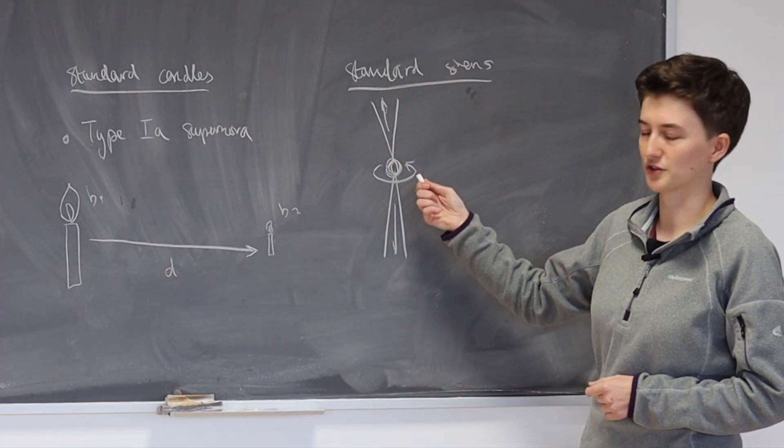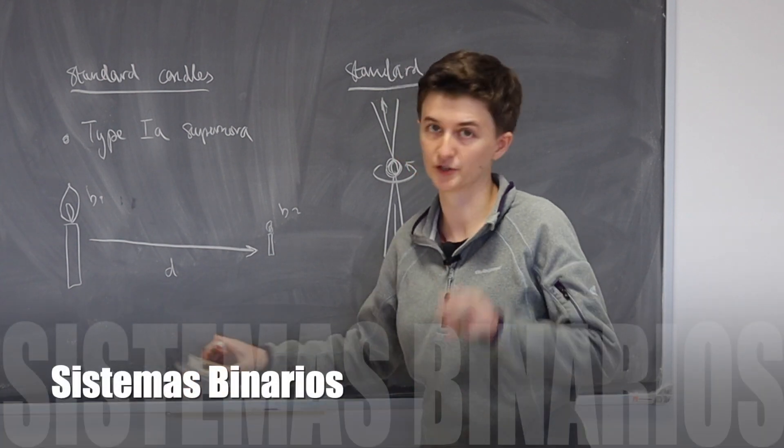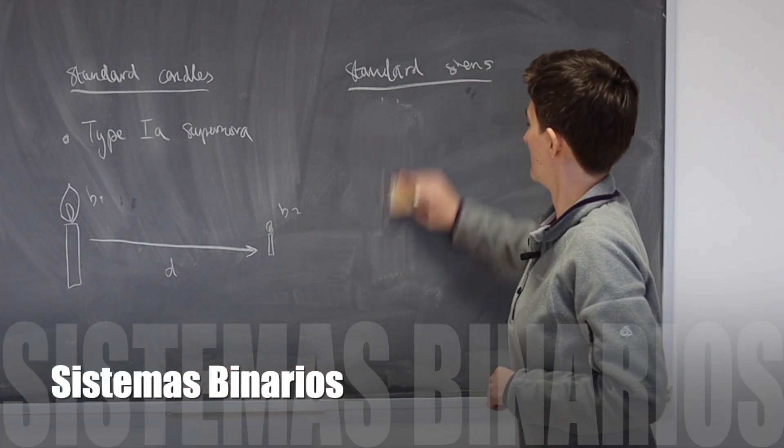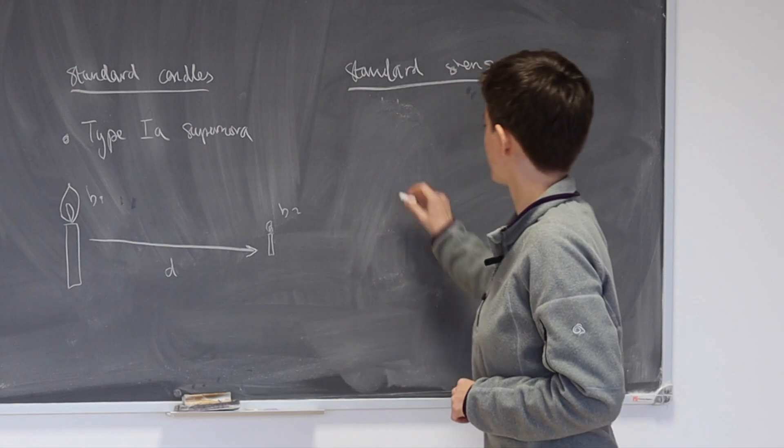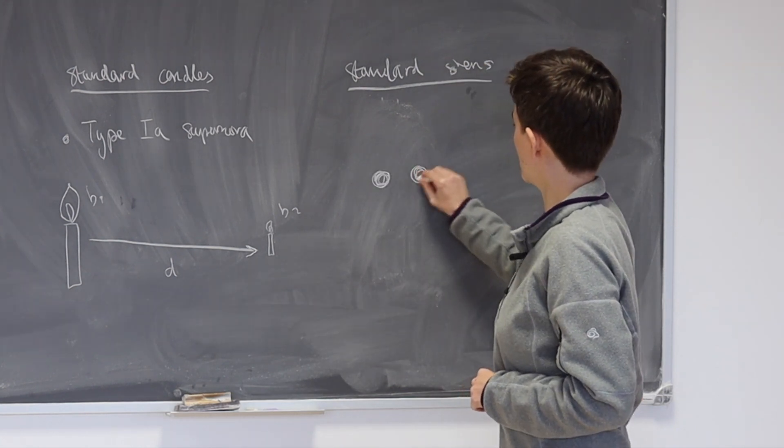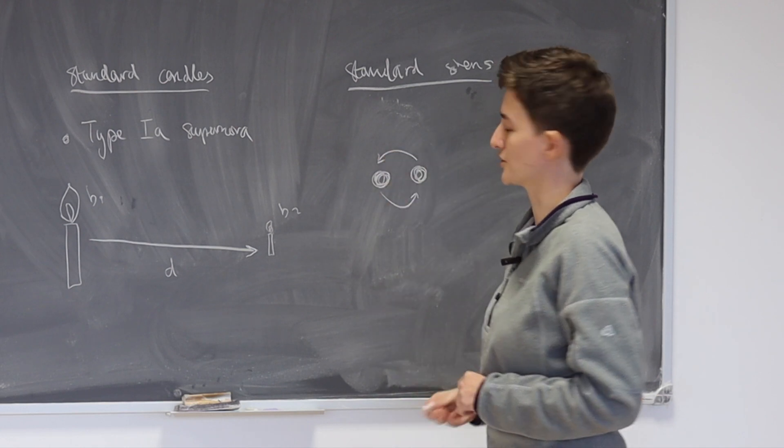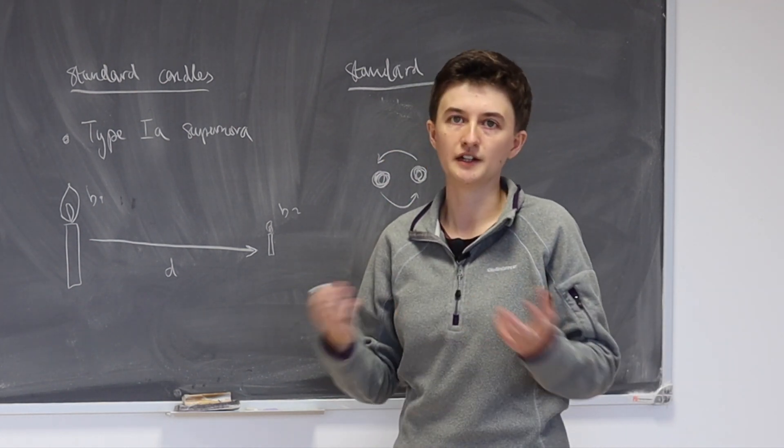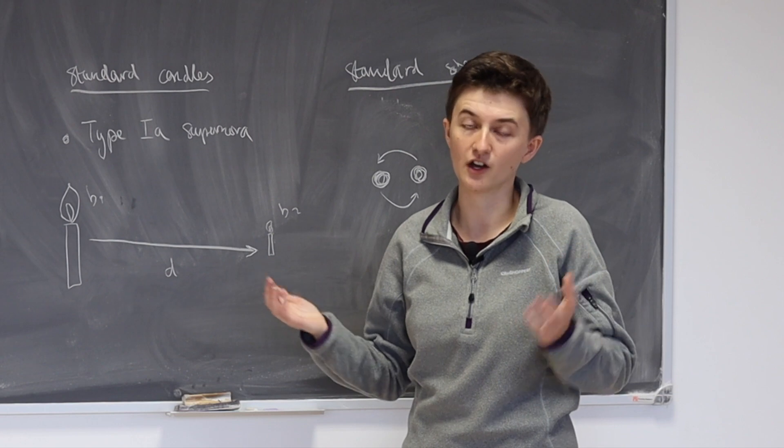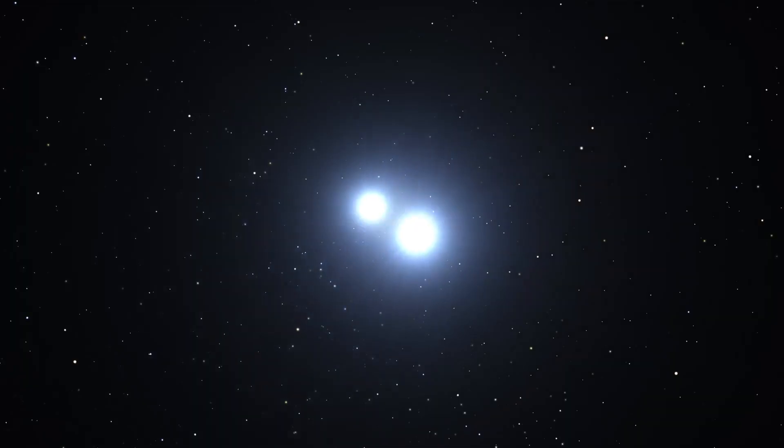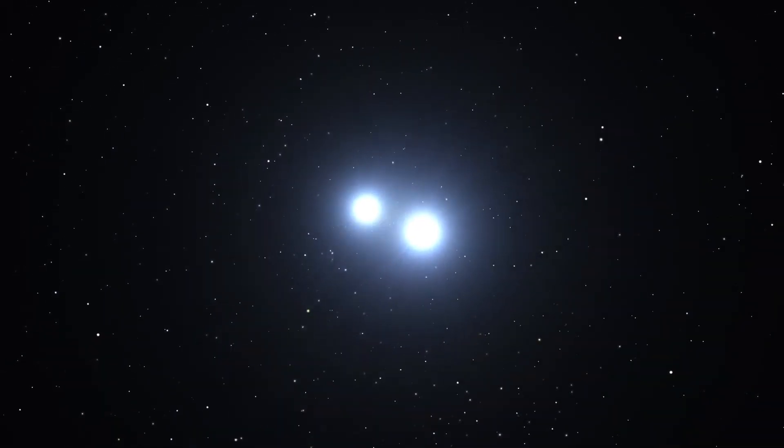Luckily, these neutron stars often form in binaries, so a pair of neutron stars together. And so we can imagine that over time we can form lots of these binary neutron star systems, where you have two neutron stars which are orbiting around each other, in exactly the same way as the Earth orbits the Sun, for example.